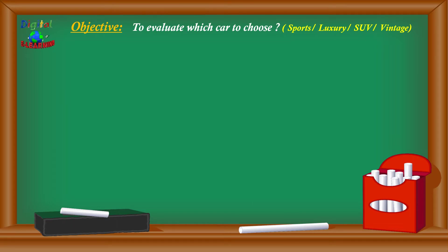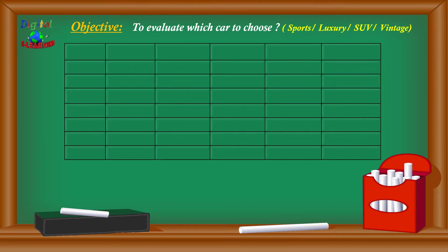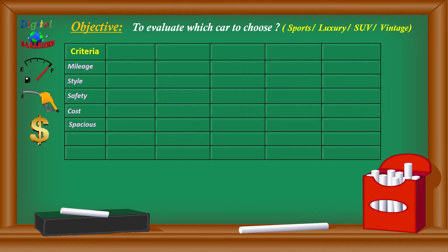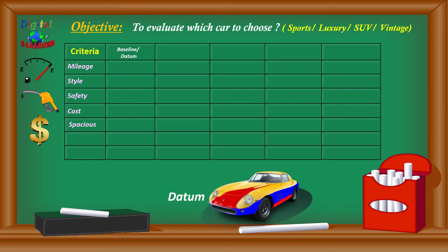Continuing with the same example and our template, in the extreme left column we list all the criteria decided through brainstorming: mileage, style, safety features like airbags, overall cost, and how spacious the car is. Next, we define our baseline or datum — in this case we select our current car as the datum and will evaluate all options against it.